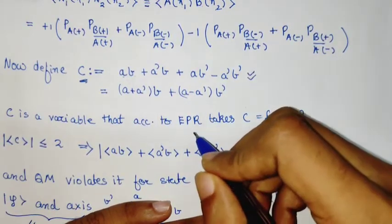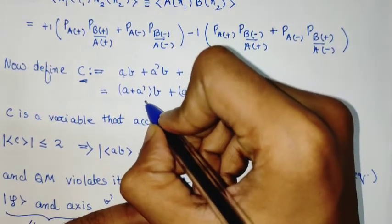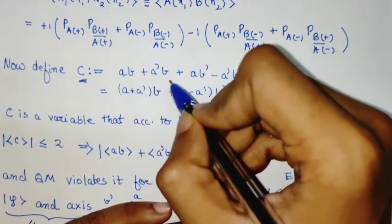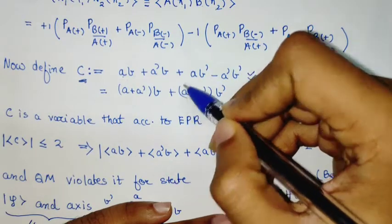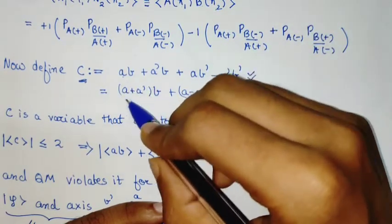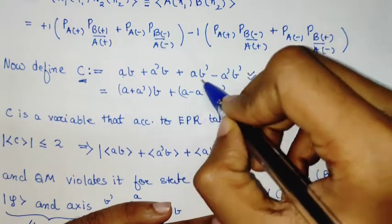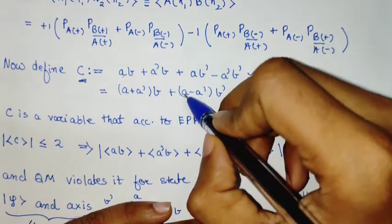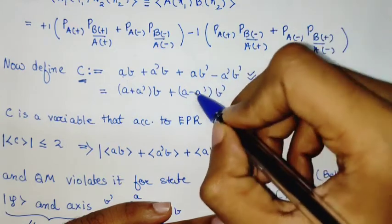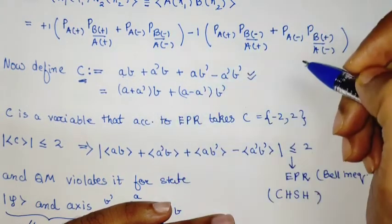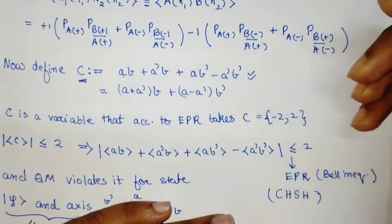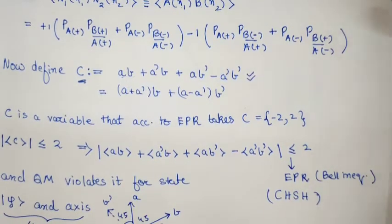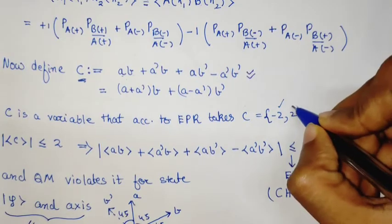When a and a' are opposite, a + a' cancels and this part remains. If a and a' take the same value, the second term cancels and the first remains. Since b can be ±1 and b' can be ±1, C is a variable that can only take value -2 or +2.